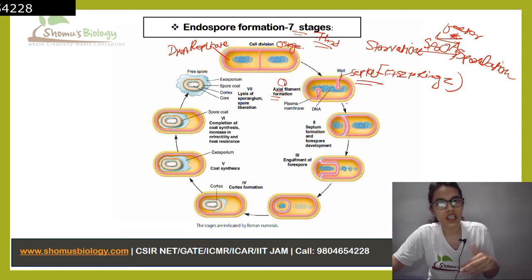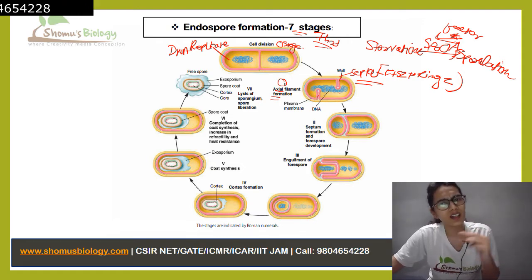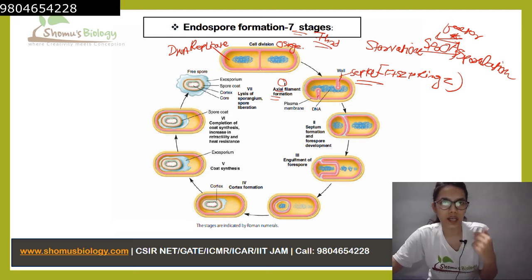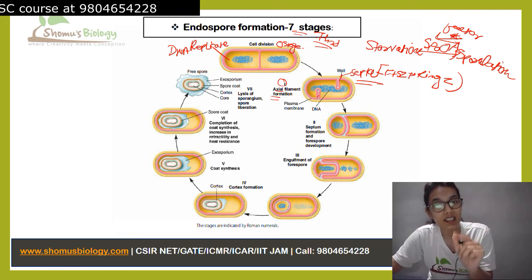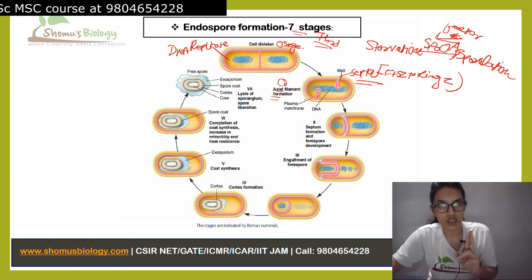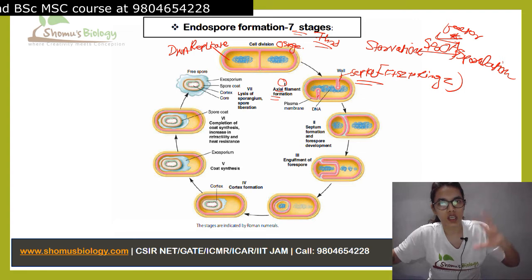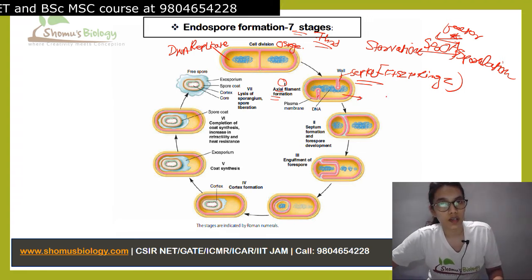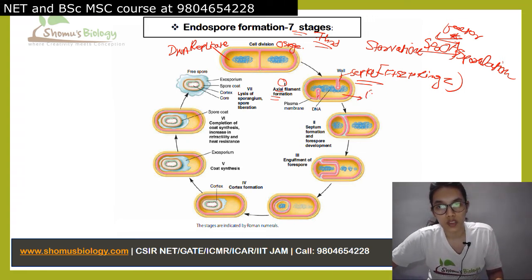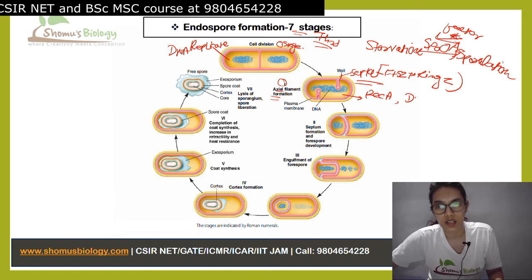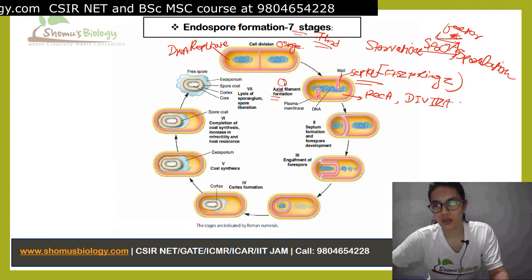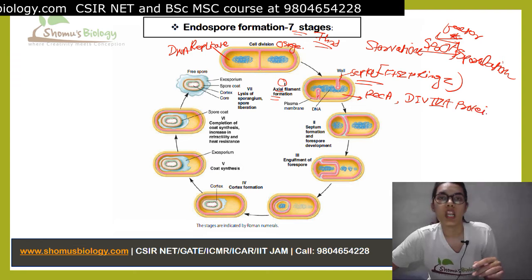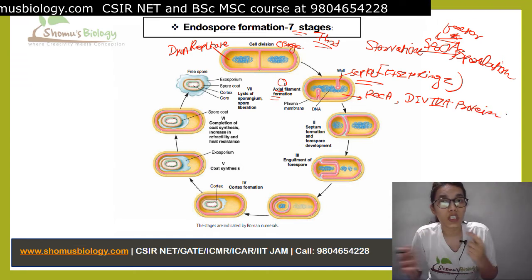In the third stage, only one of the two septa is going to stay and the other will disappear. At the same time, in the first stage, axial filament formation has started. Two proteins are going to help here: the first is called RecA, and the other is called SpoIIIE, a B4A protein.